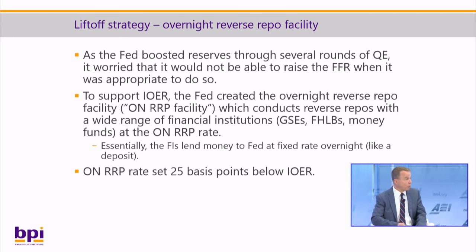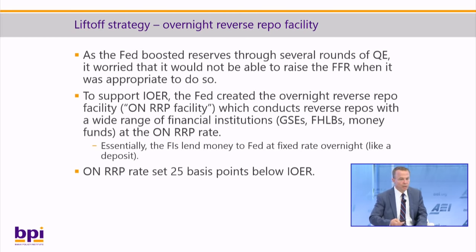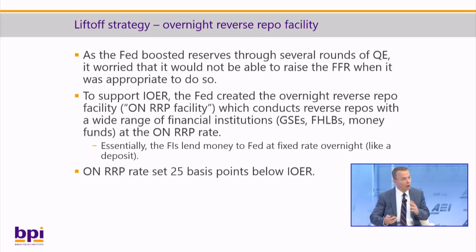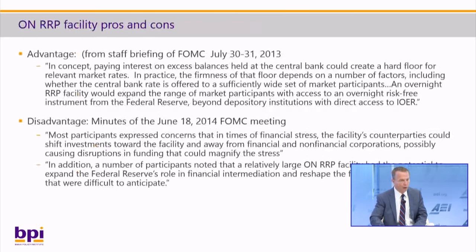So as the Fed boosted reserves through several rounds of QE, it worried that it would not be able to raise the federal funds rate when appropriate. To support IOER, the Fed created the overnight reverse repo facility — the overnight RRP facility — which conducts reverse repo with a wide range of financial institutions, including GSEs and federal home loan banks, at the overnight RRP rate. Effectively, those institutions are also making deposits at the Fed and getting interest on them. The overnight RRP rate was set 25 basis points below IOER.